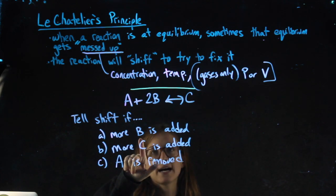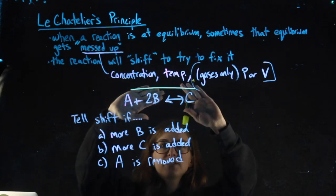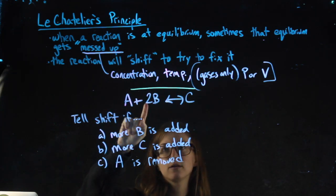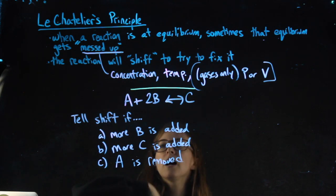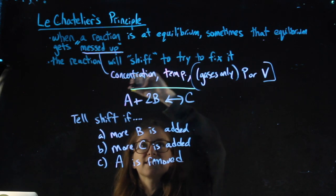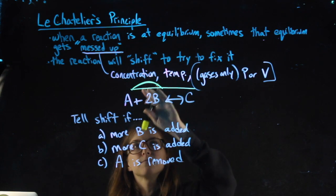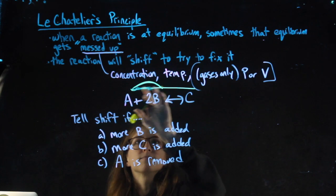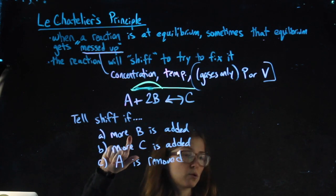For instance, if more B is added—well, B is on the left side of the arrow. All I care about is left and right. I don't care about further to the left; left of the arrow is fine. So more B added means I'm putting more stuff on this side of the arrow. I have a hill here.